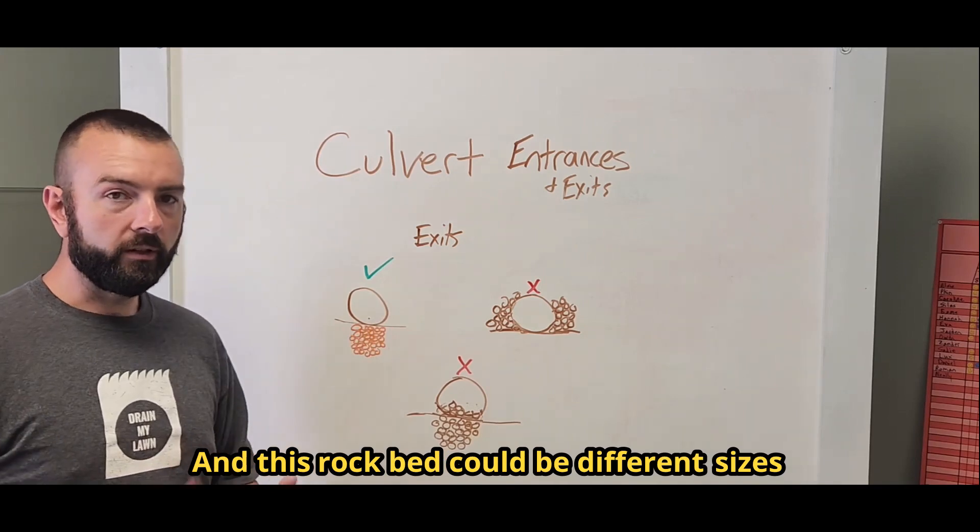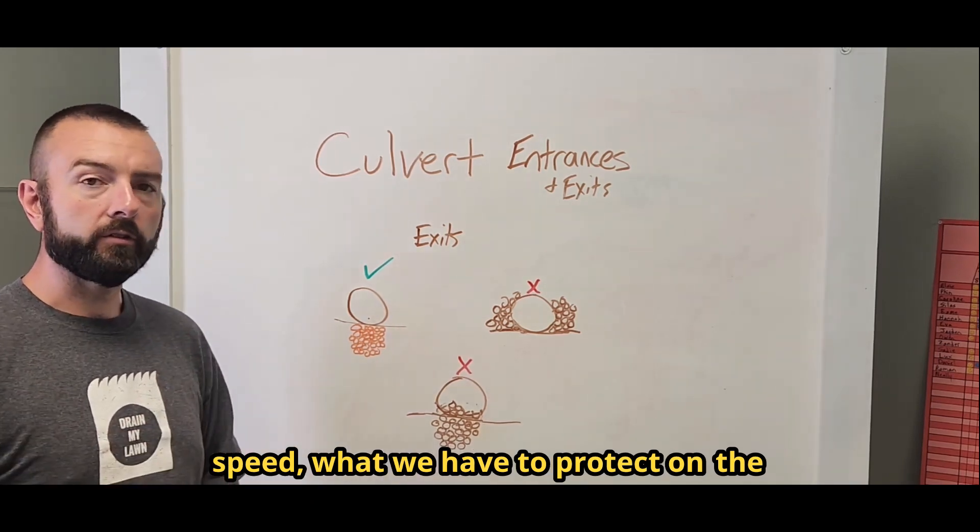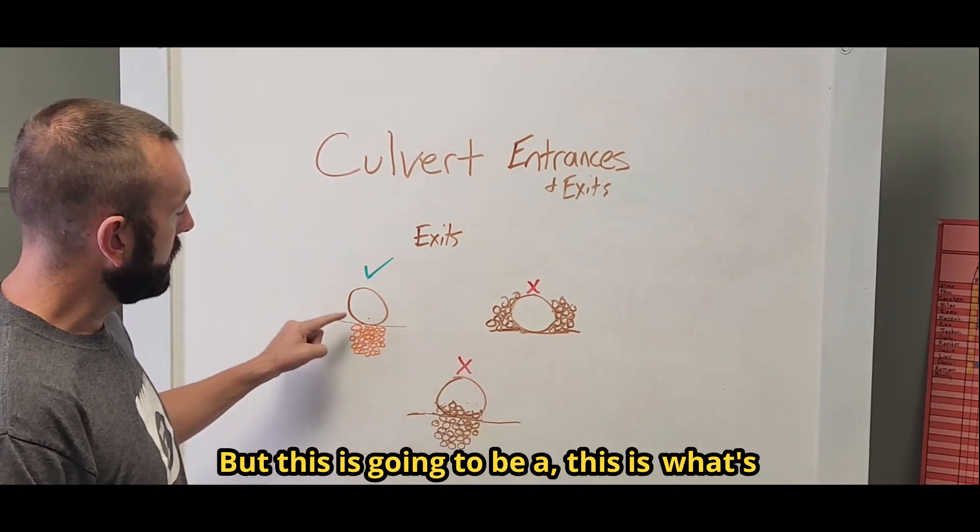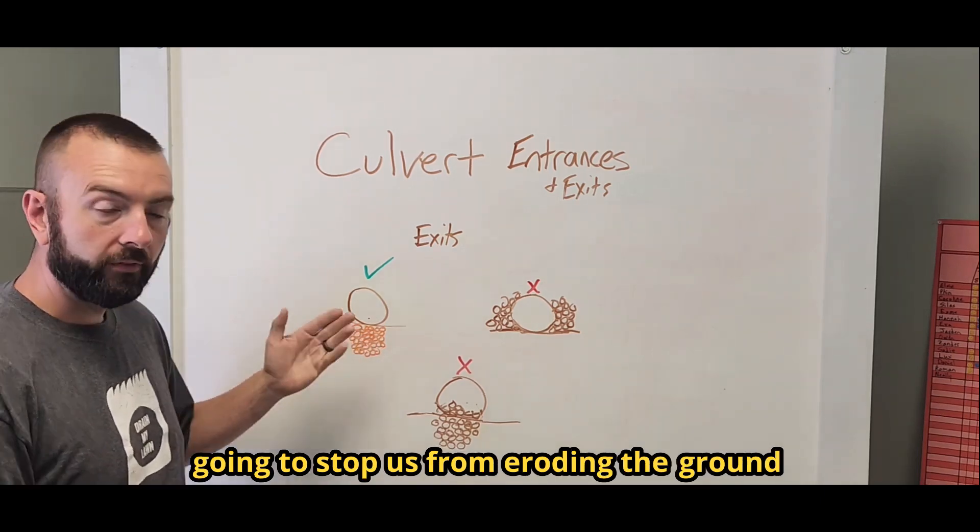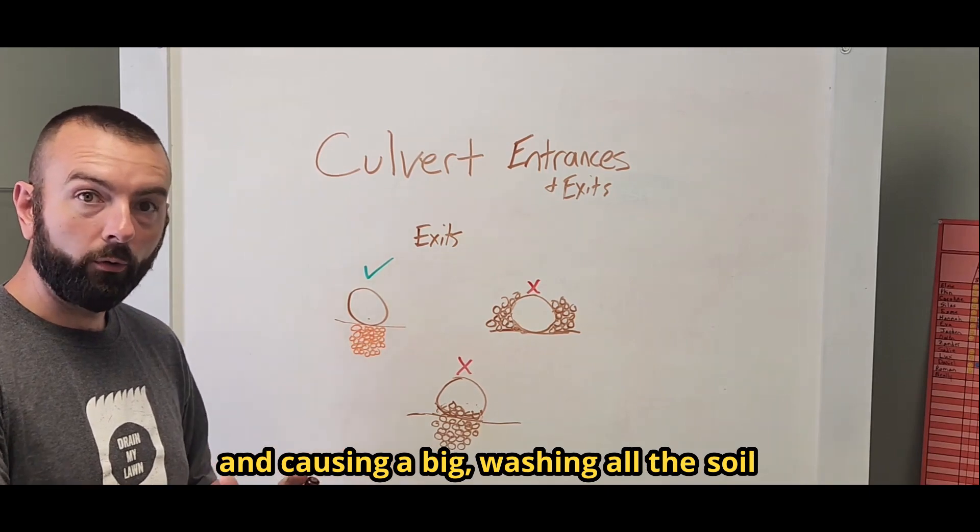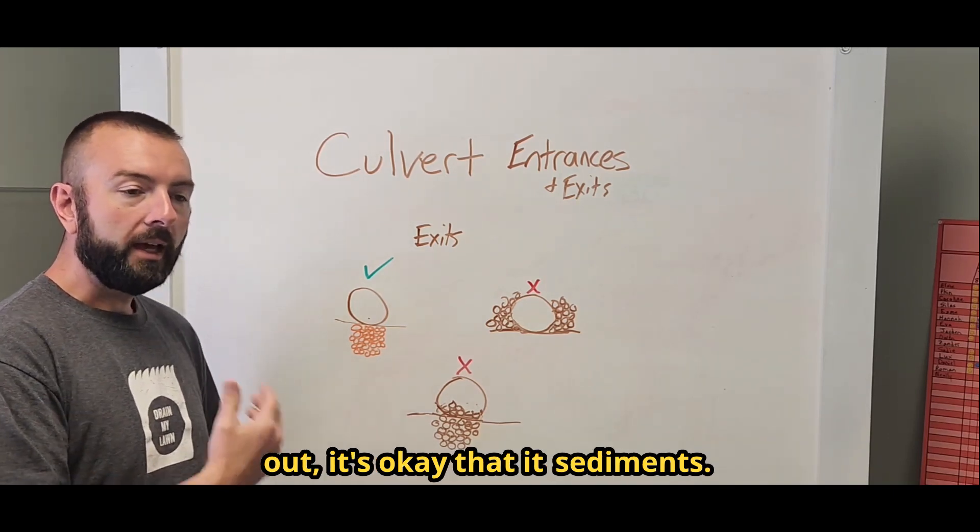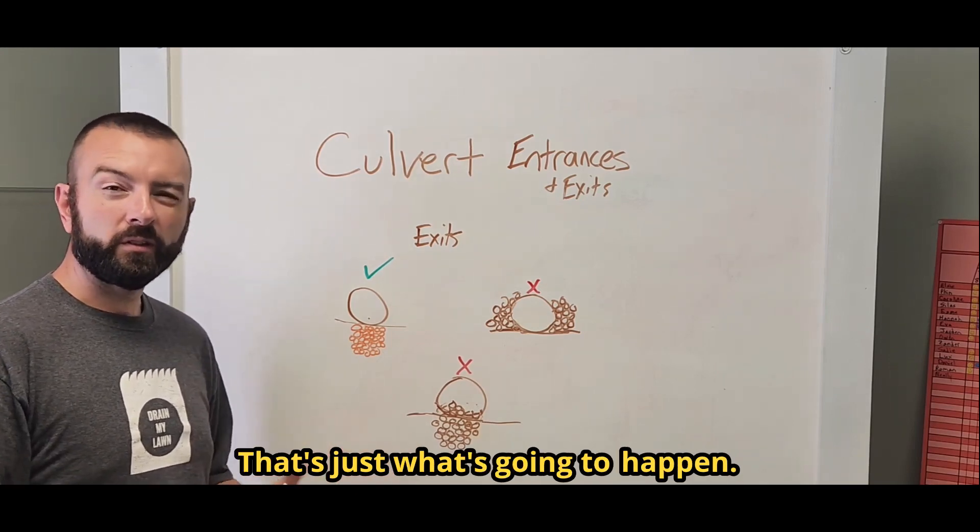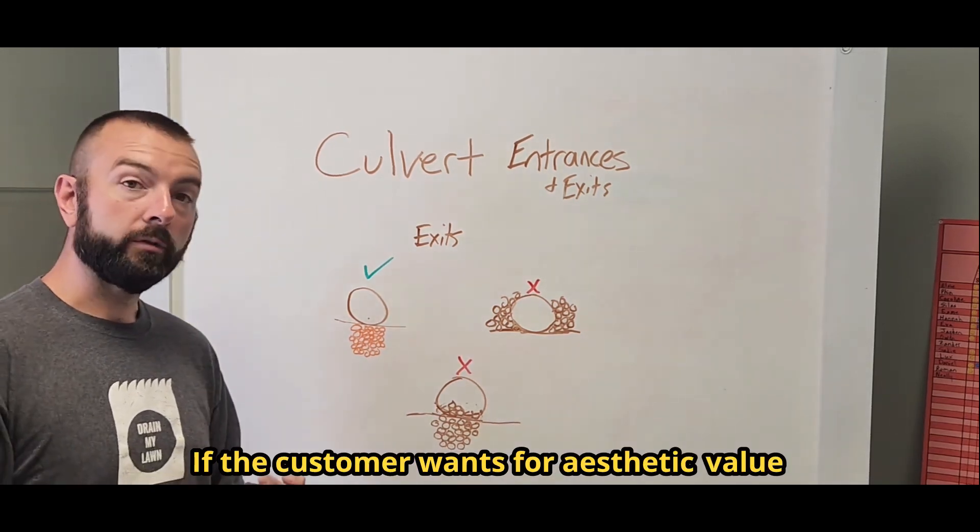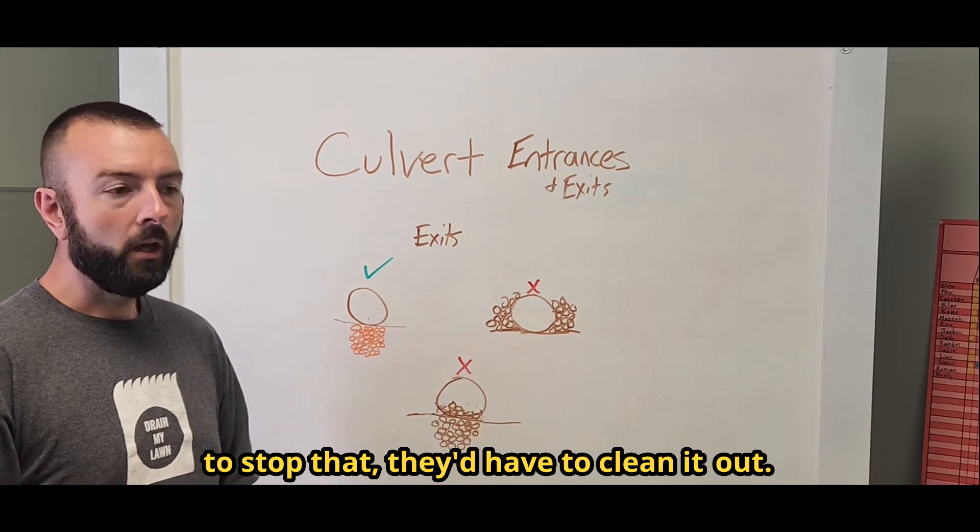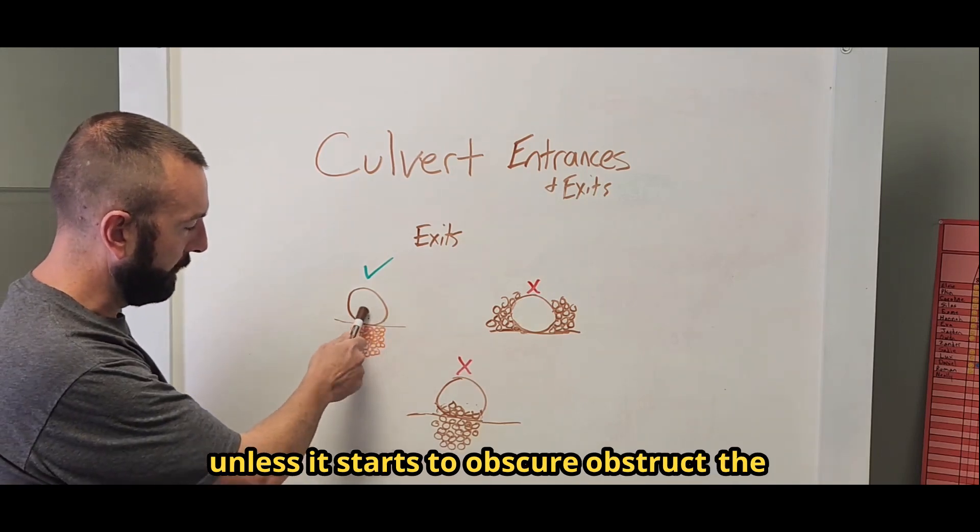This rock bed could be different sizes depending on the volume that we're dealing with, the volume of water, the speed, what we have to protect on the other side. Those are all going to be variables, but this is what's going to stop us from eroding the ground and washing all the soil away. Sedimentation, once the water's come out, it's okay that it sediments. That's just what's going to happen. So these rocks eventually will become full with dirt. If the customer wants for aesthetic value to stop that, they'd have to clean it out. But what will happen once it sediments, it's not going to cause a real problem unless it starts to obscure, obstruct the pipe.